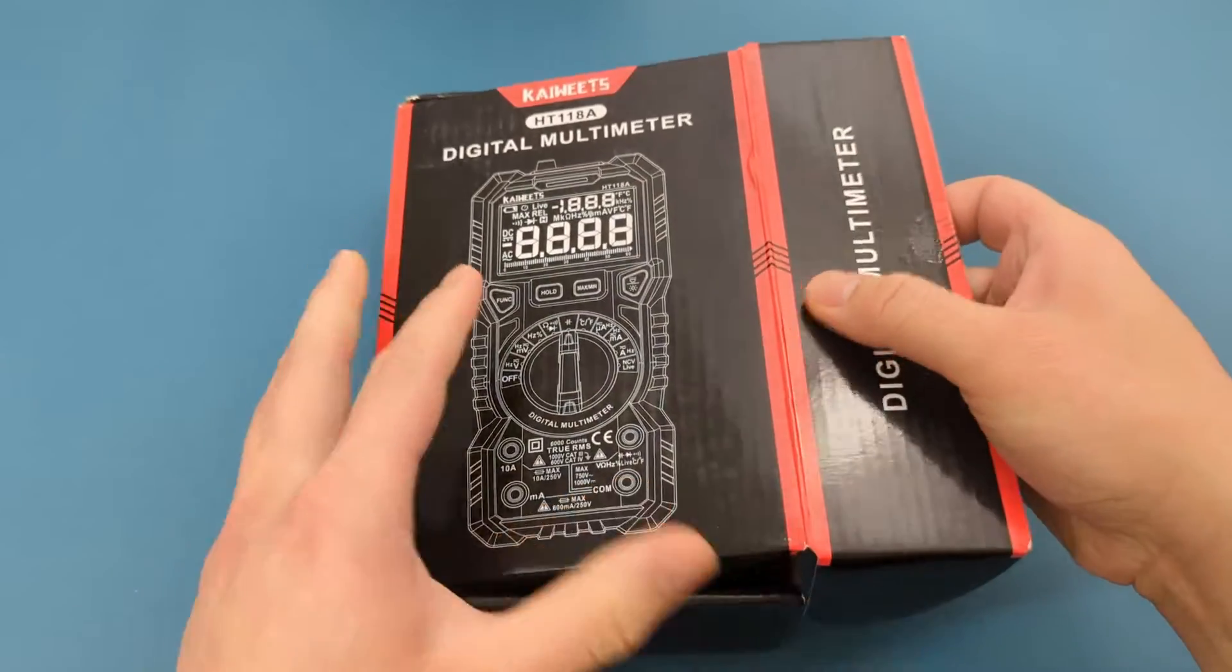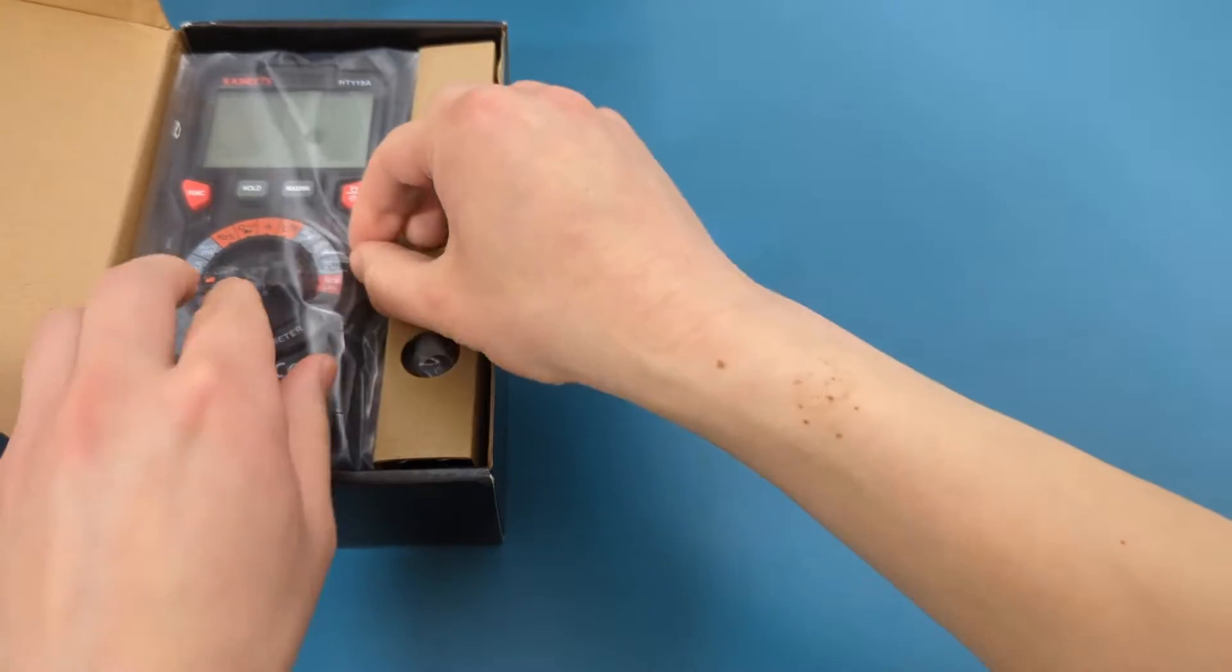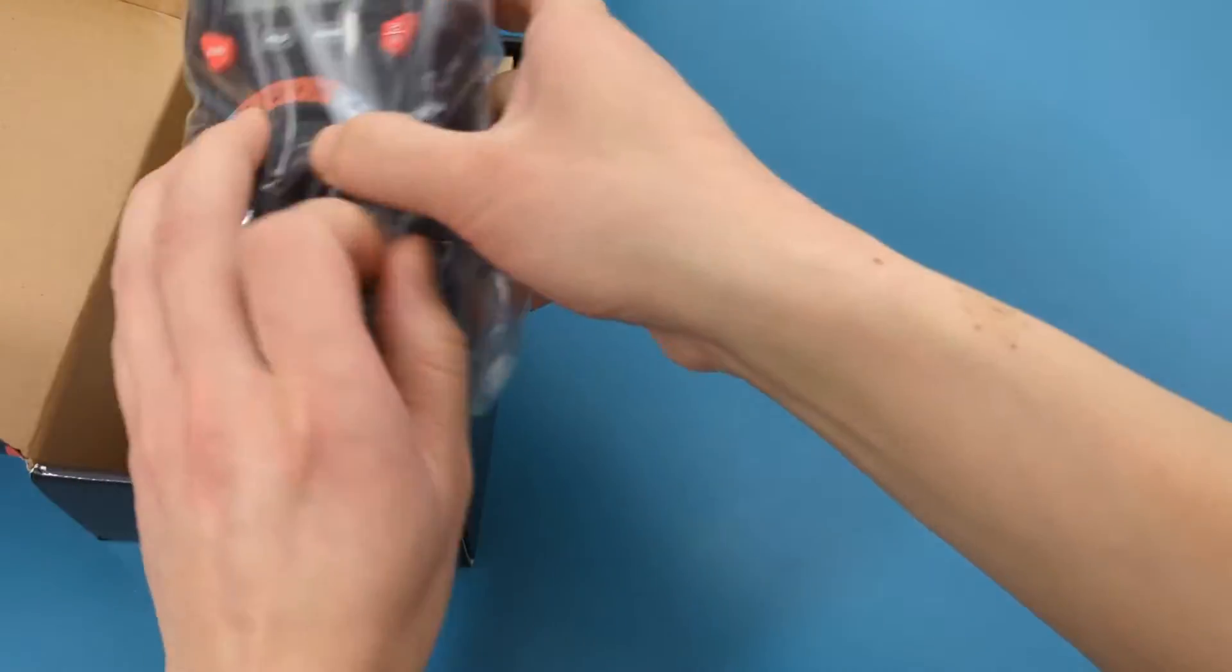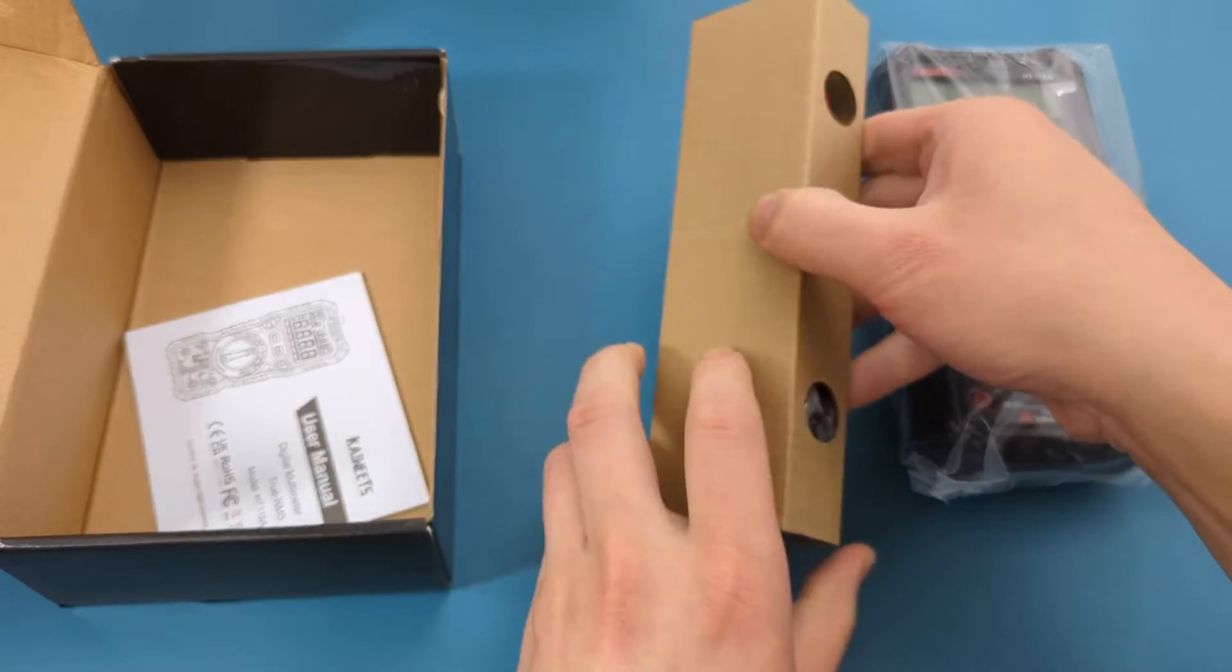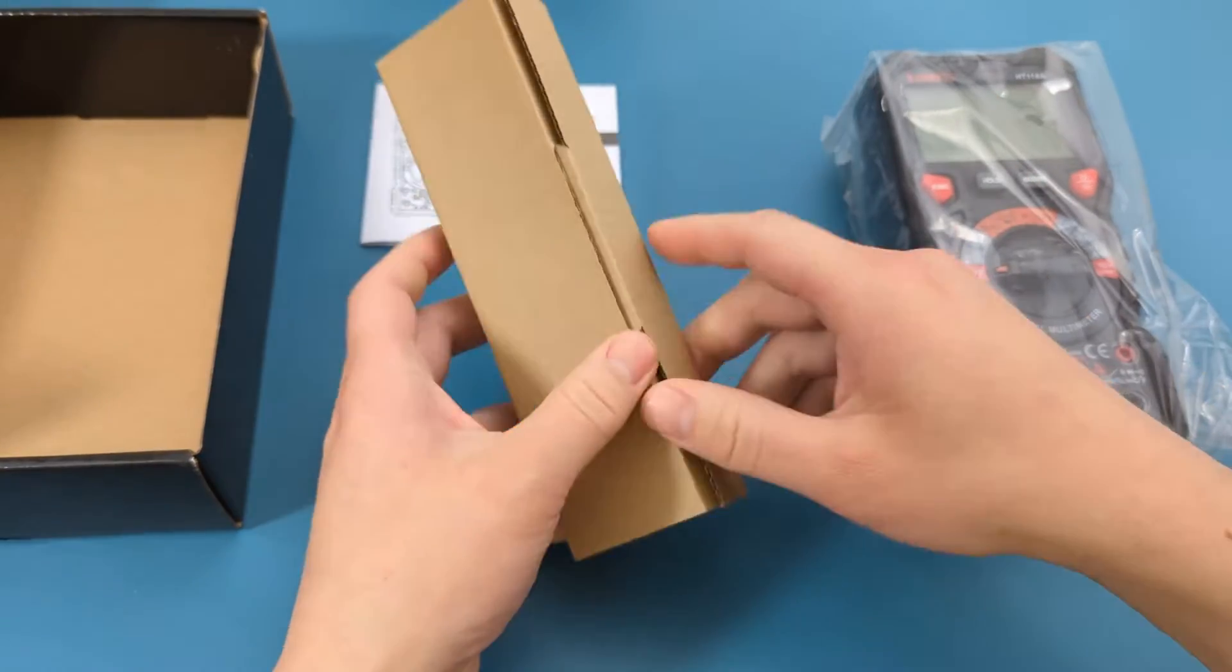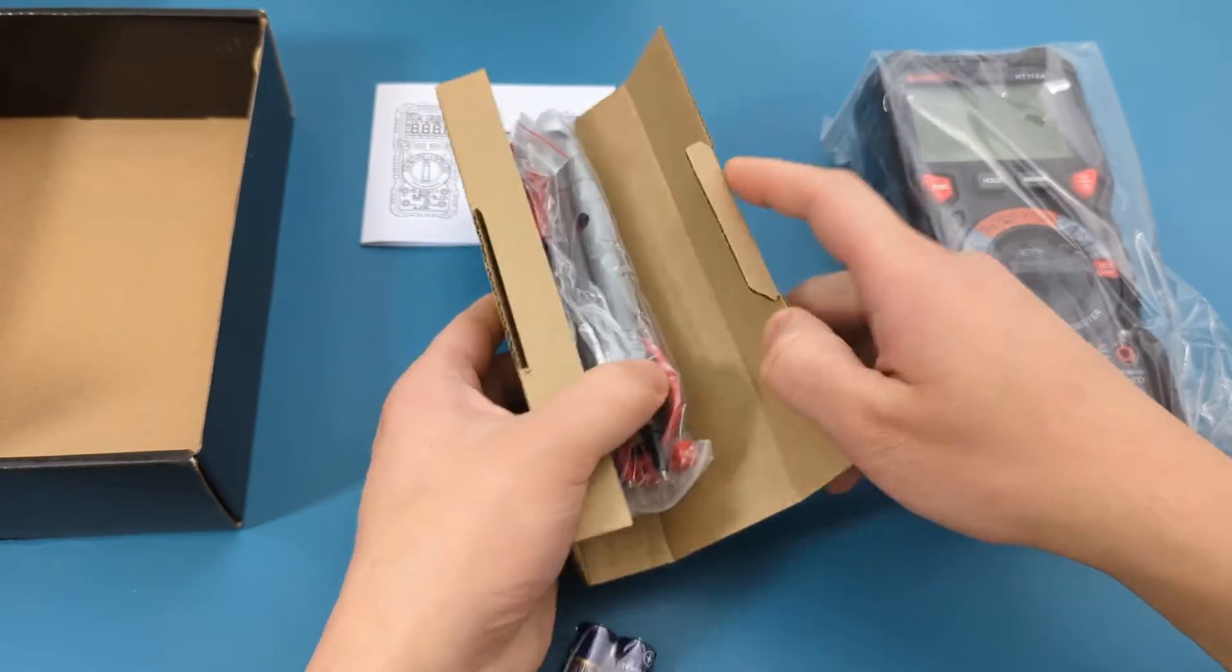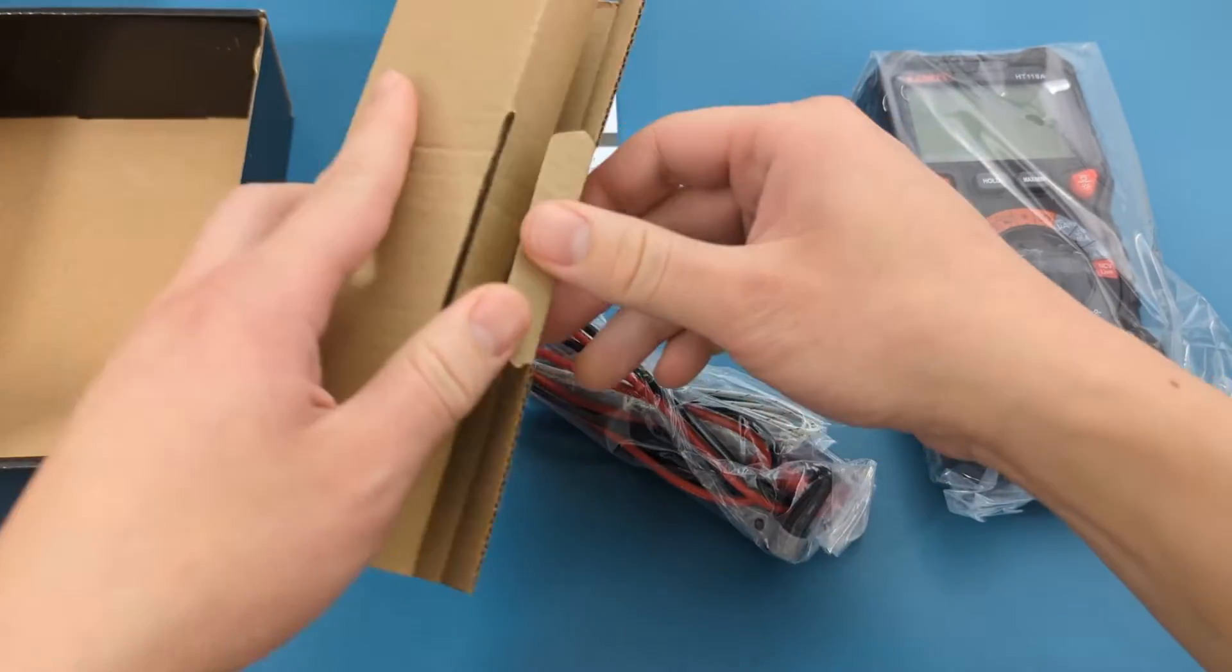First, we'll unbox it and evaluate its features. The box includes the multimeter, test leads, thermocouple, two AA batteries, and a user manual. A thermocouple is a sensor that measures temperature which I will demonstrate later in the video.